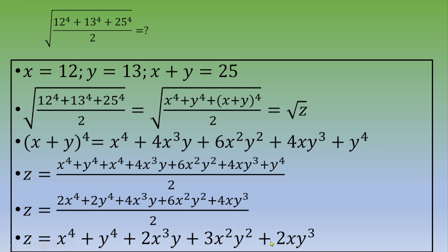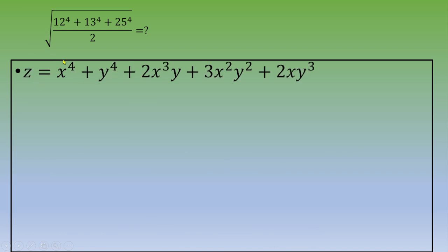After simplifying, we end up with z equal to x to the power 4 plus y to the power 4 plus 2x cubed y plus 3x squared y squared plus 2xy cubed. Now, to take the square root, we want to transform this into a perfect square. We note that x to the power 4 can be written as (x squared) squared, and y to the power 4 as (y squared) squared, with another term x squared y squared.